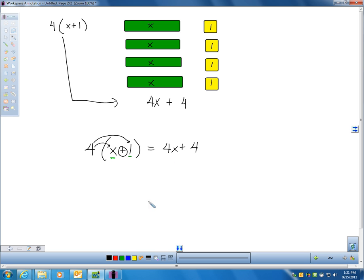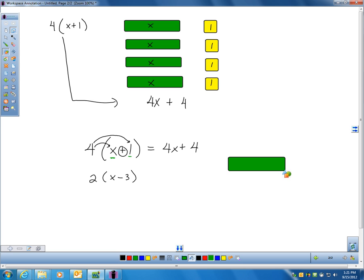Or, here would be another example. Let's say that I had 2 times x minus 3. Well, I'll do an algebra tile example again. So, first of all, to get that, I'm going to get these tiles out. I need to get out an x tile. So, here's my x tile.